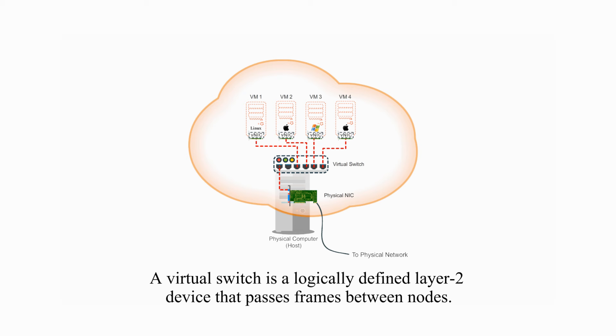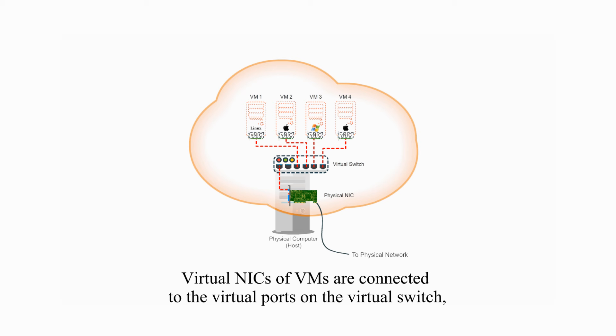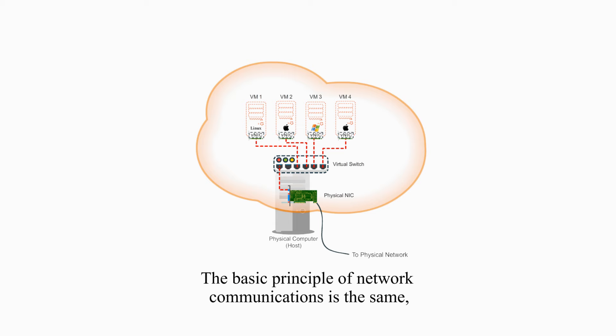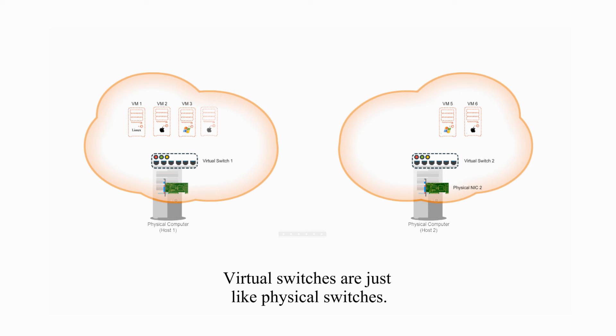A virtual switch is a logically defined layer-2 device that passes frames between nodes. Virtual NICs of virtual machines are connected to the virtual ports on the virtual switch, which is then connected through the host physical NIC to the physical network. The basic principle of network communications is the same, whether they are virtual or physical.